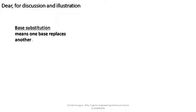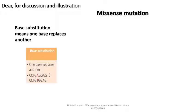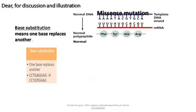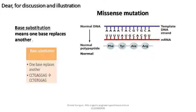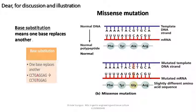Base substitution means one base replaces another. In a missense mutation, the mRNA forms a different codon, so a different tRNA is involved, and a different amino acid is incorporated into the polypeptide chain. This affects the primary structure of the polypeptide or enzyme, which may also affect the 3D structure of the enzyme and its active/binding site, affecting the catalytic activity of the protein kinase enzyme.